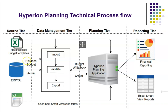In cases where they differ, we also need to map the local chart of accounts to the global chart of accounts, which we will discuss later. Users log into the Hyperion planning application directly and input data through Excel Smart View. These are the different source files and source systems available in a Hyperion planning project.